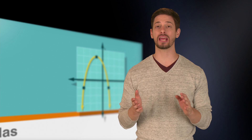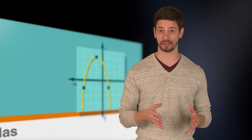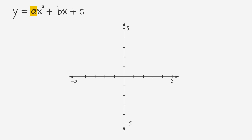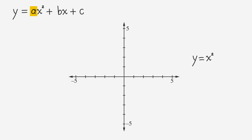Let's review what a, b, and c tell us about the shape and location of the parabola on the xy coordinate plane. If a is positive, the parabola will open up, and if a is negative, the parabola will open down. For example, in the equation y equals x squared, the coefficient of x squared is positive 1, so the parabola opens upward.